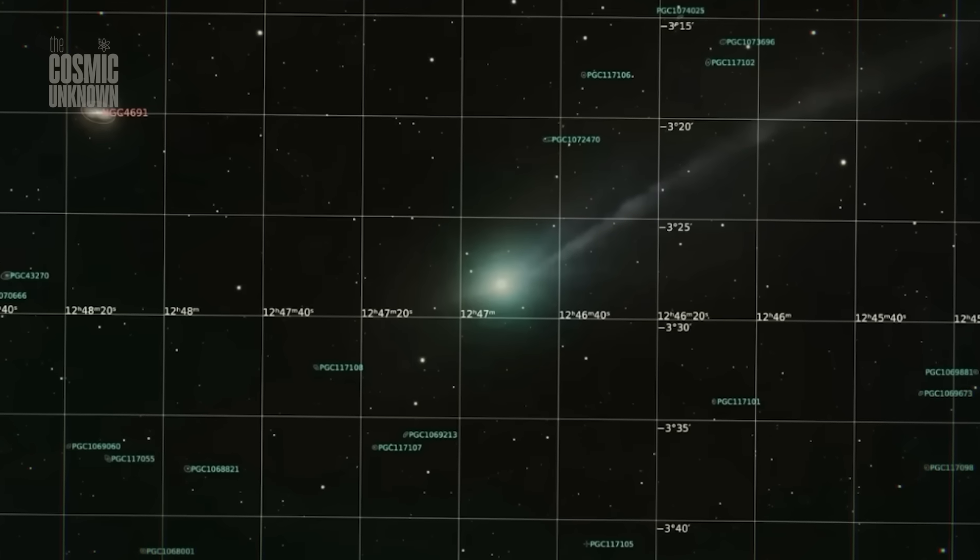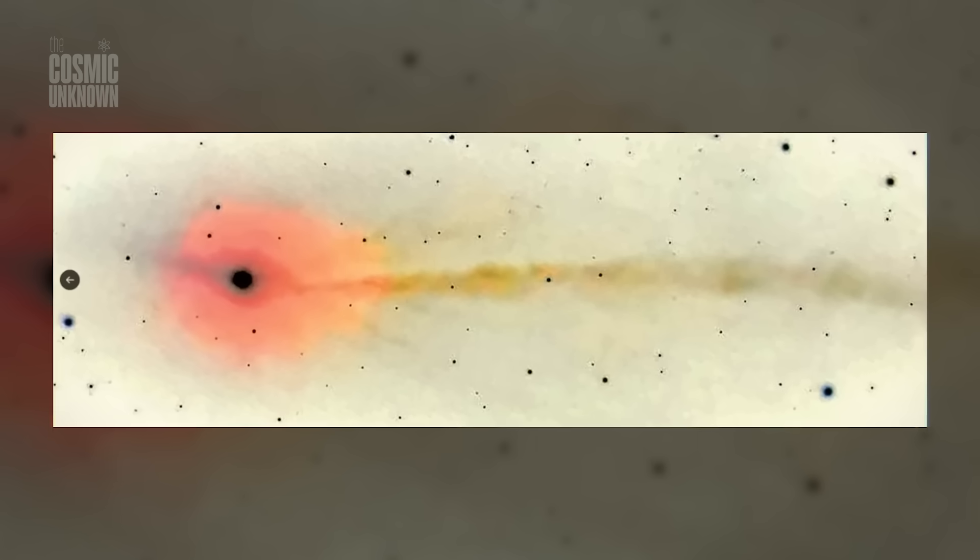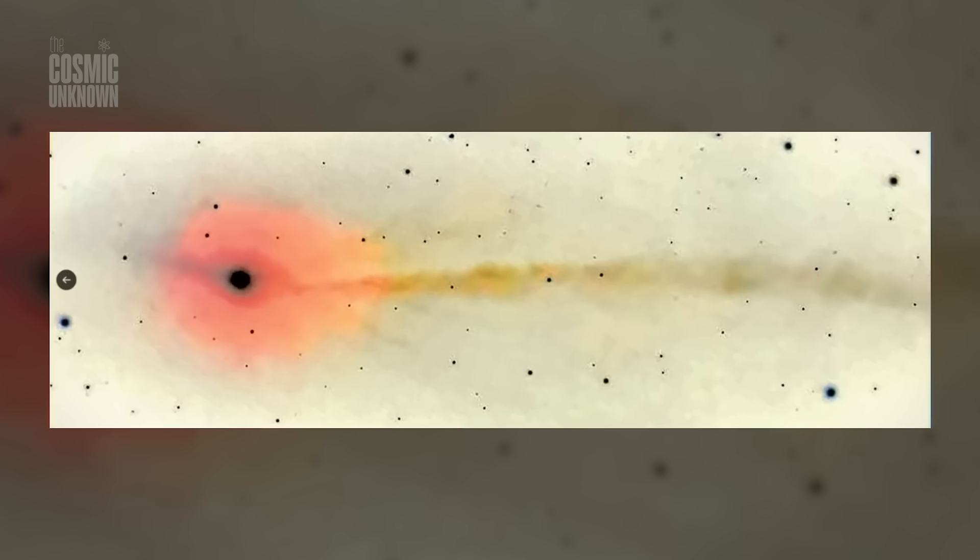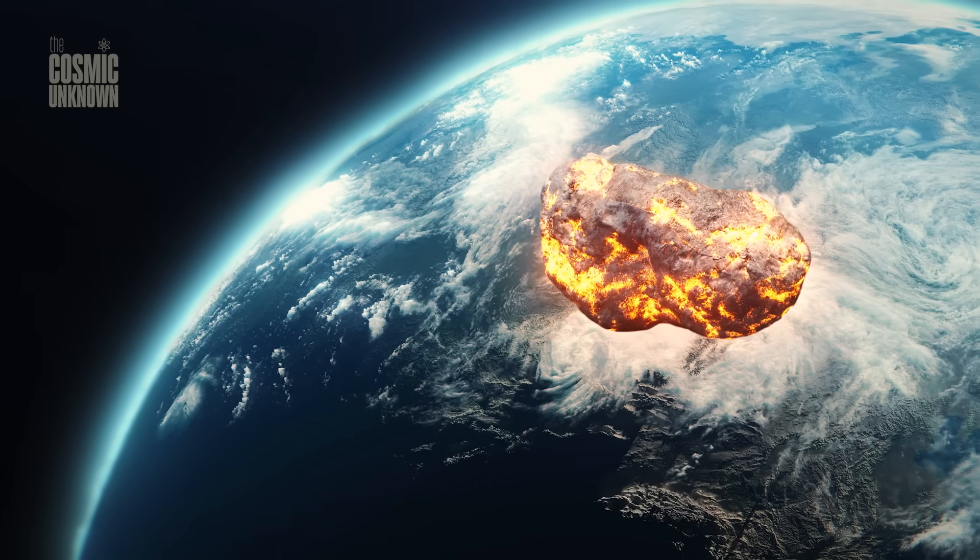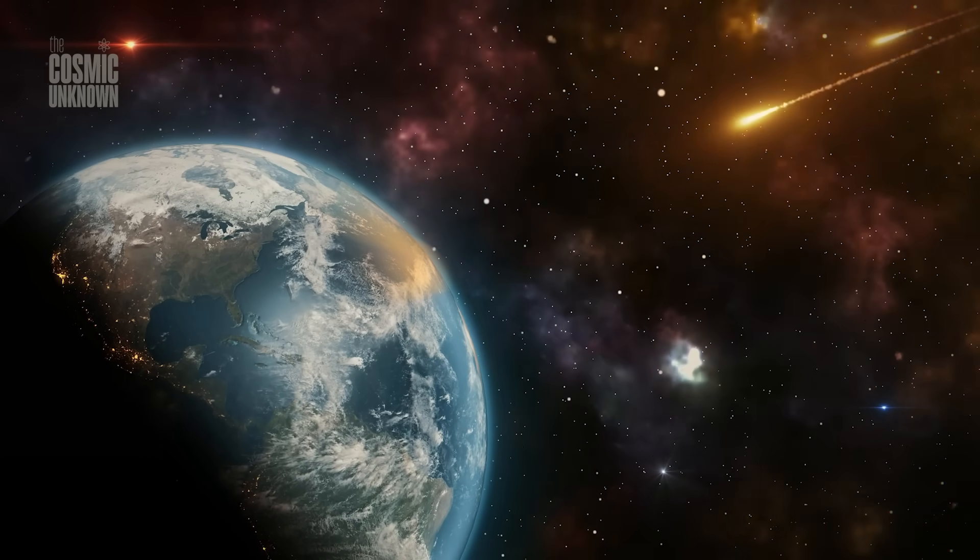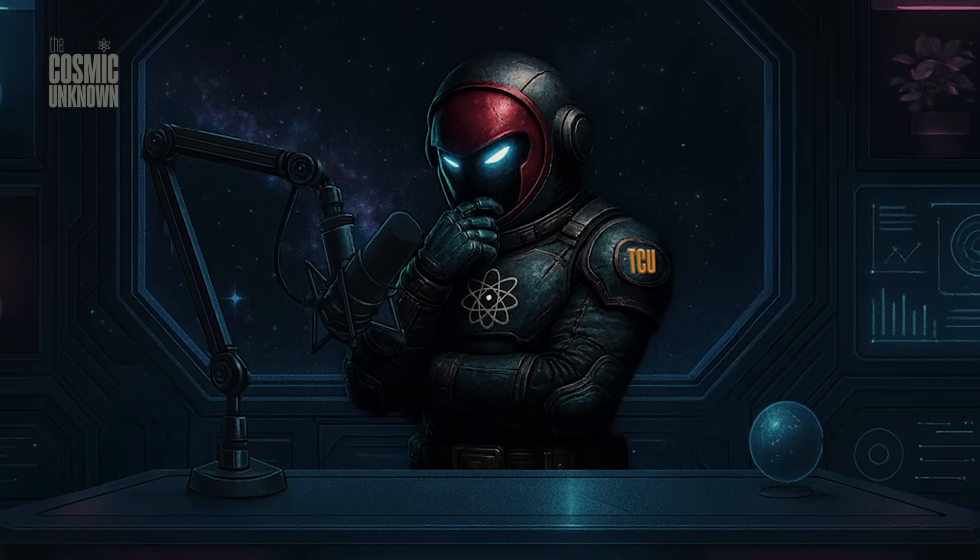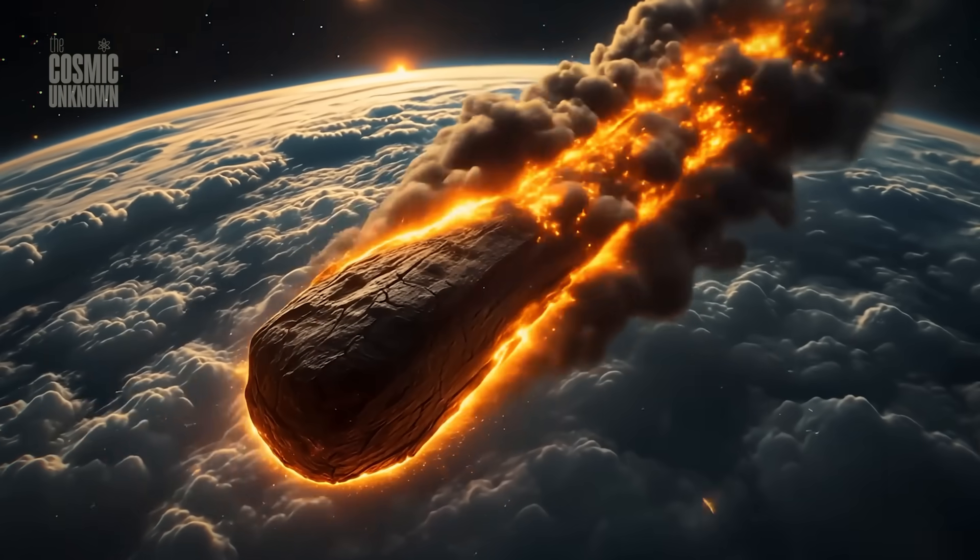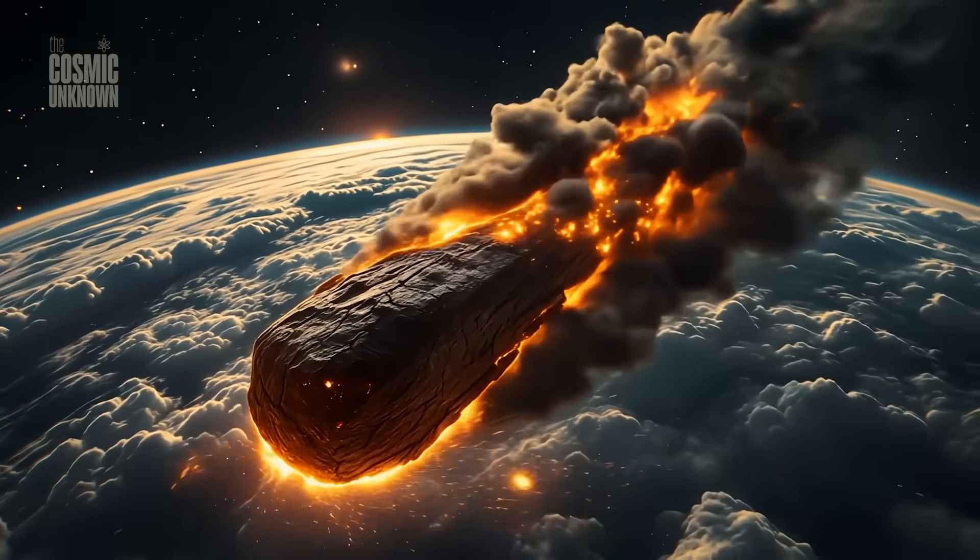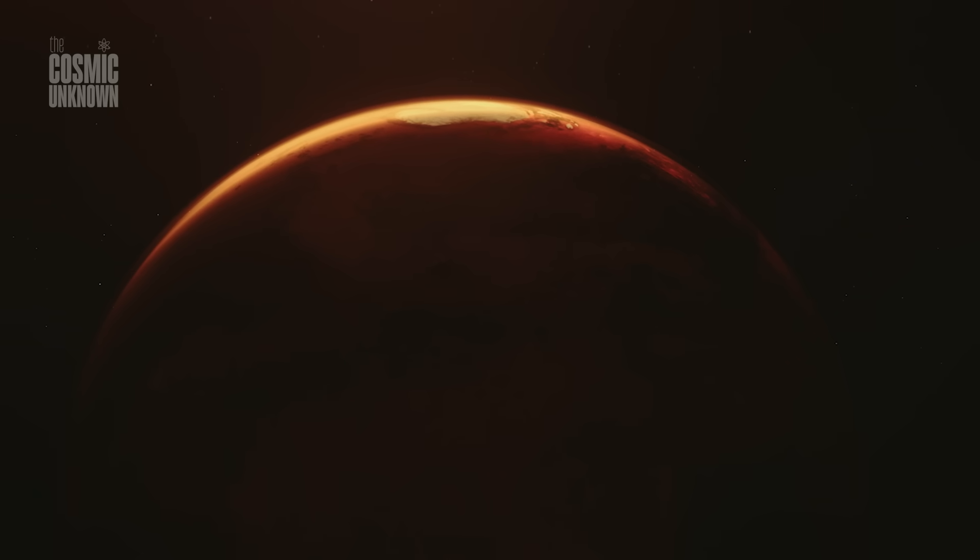And maybe that's the part that makes this image stand out—it gives 3i Atlas a shape that feels grounded, something you can point to and say, 'Oh okay, this is the object we've been talking about.' It doesn't scream for attention, it doesn't try to look dramatic—it just exists there with this quiet clarity, almost like the silence in the picture is helping the object hold itself together in a way we haven't seen before.